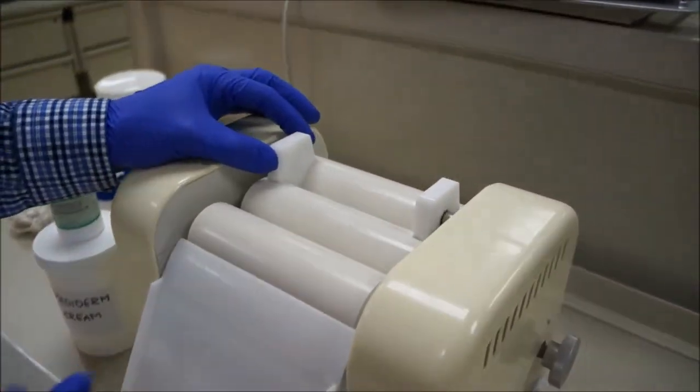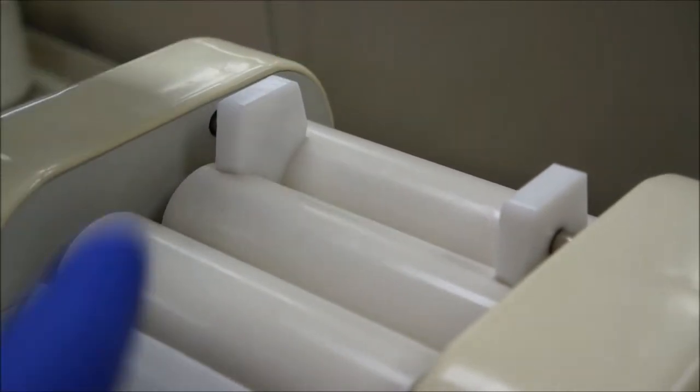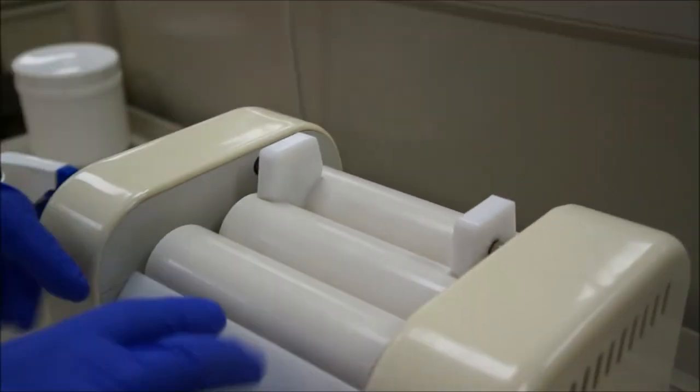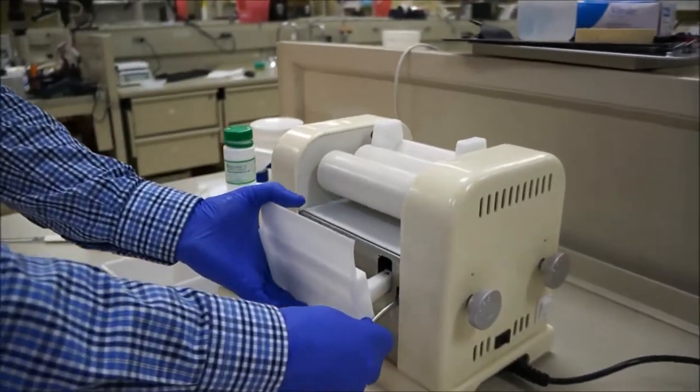On top here we have two spacers where you would put your ointment or cream that way you would run through the machine. It would go down, come up and hit this scraper plate and come down. The scraper plate's removable so you can wash it and get everything off of it.